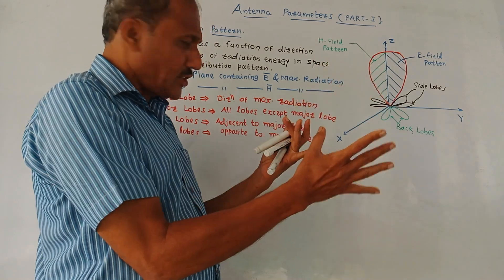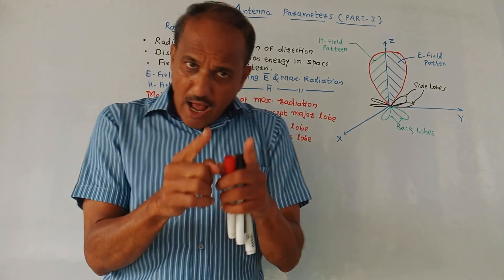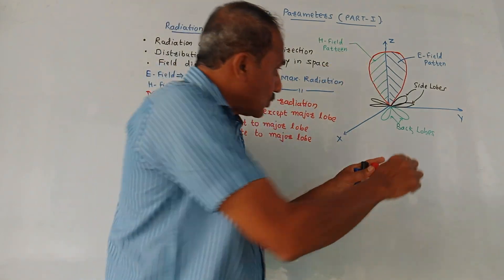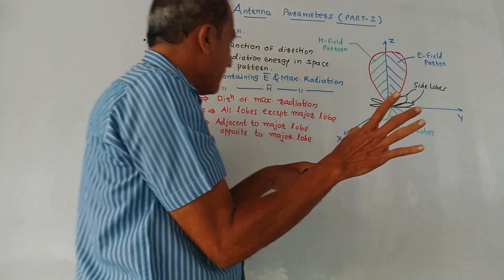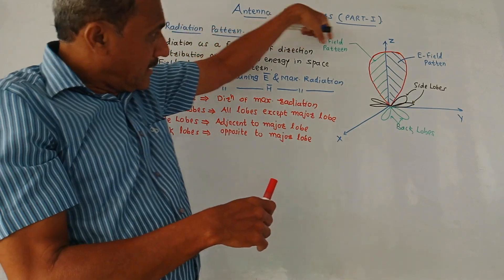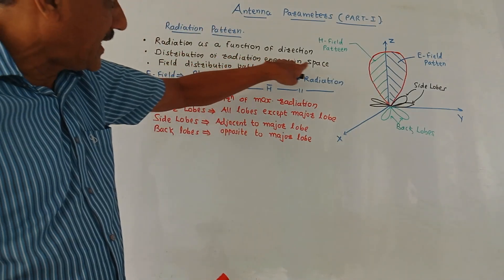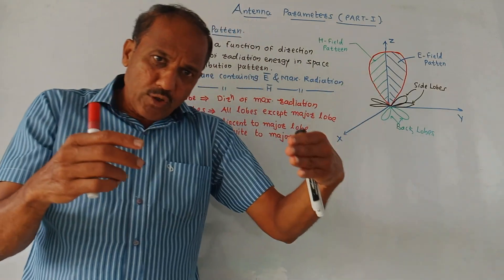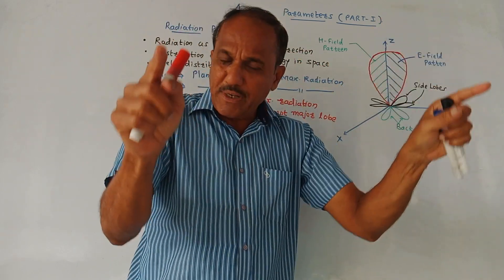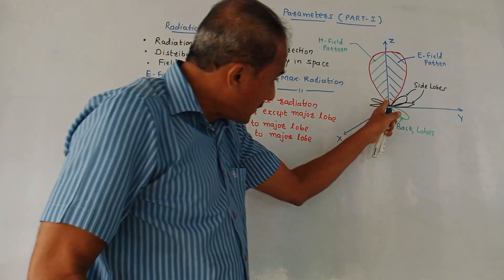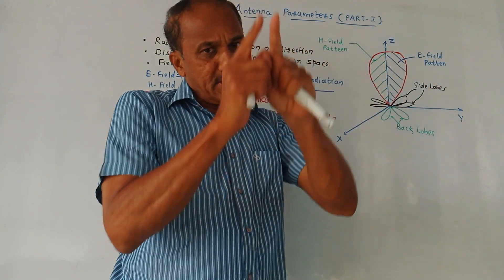Define and explain the term radiation pattern, or define different lobes of radiation pattern. If you are talking about a transmitting antenna, along one particular direction you are getting maximum output — this particular pattern is called Major Lobe. Radiation is a function of direction and it gives the distribution of radiation energy in free space, showing how energy is distributed when the transmitting antenna transmits the signal.